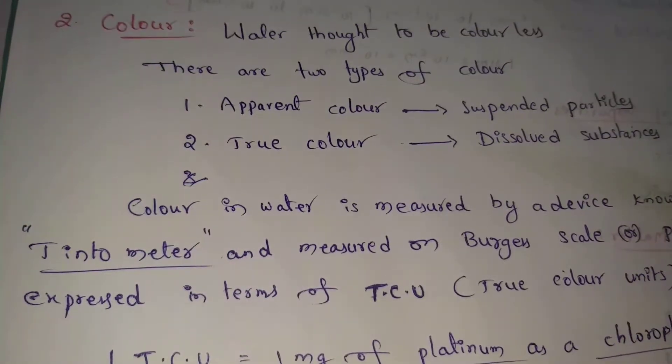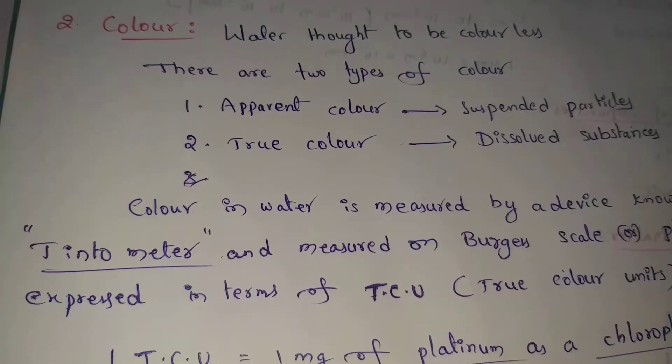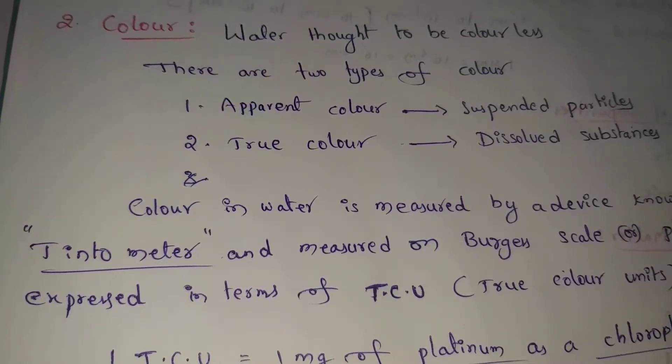Next topic: color. In physical water quality testing, we will find out about the color. There are two types of color: apparent color from suspended particles, and true color from dissolved substances.